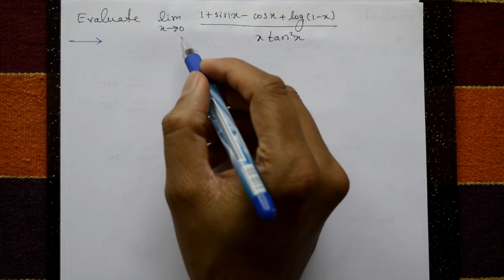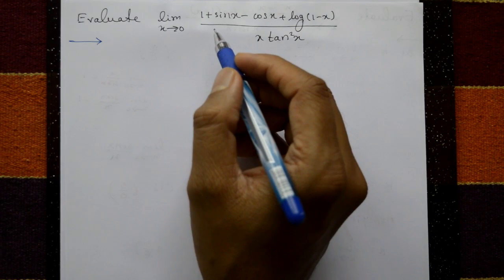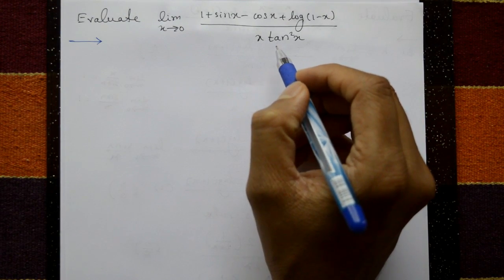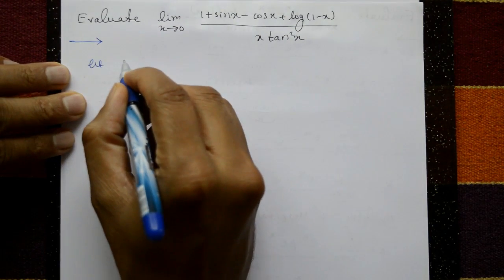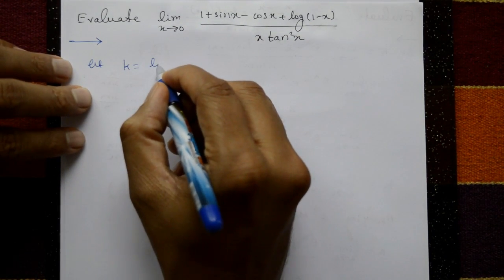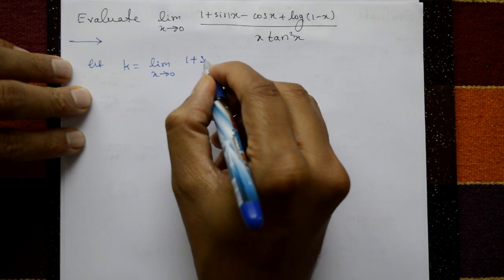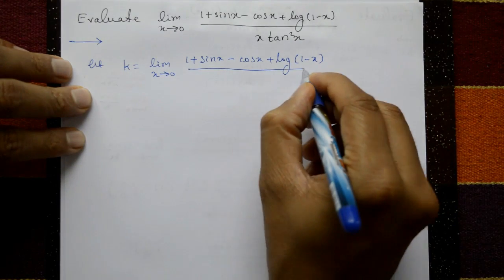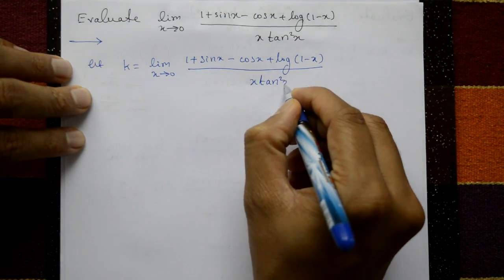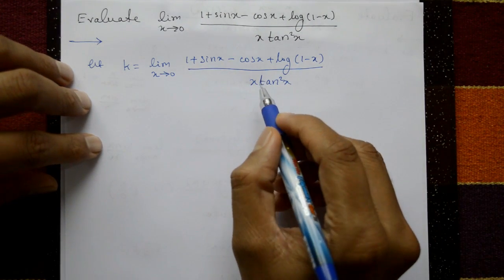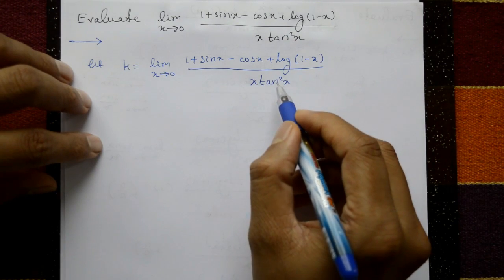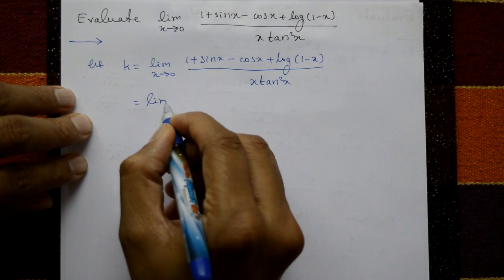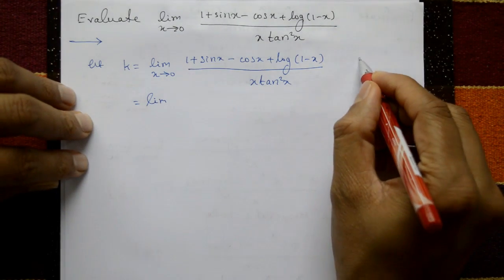Evaluate the limit as x tends to 0 of (1 + sinx - cosx + log(1 - x)) divided by x·tan²x. Let this limit be called k. Put x = 0 in numerator and denominator — you get 0 by 0 form.